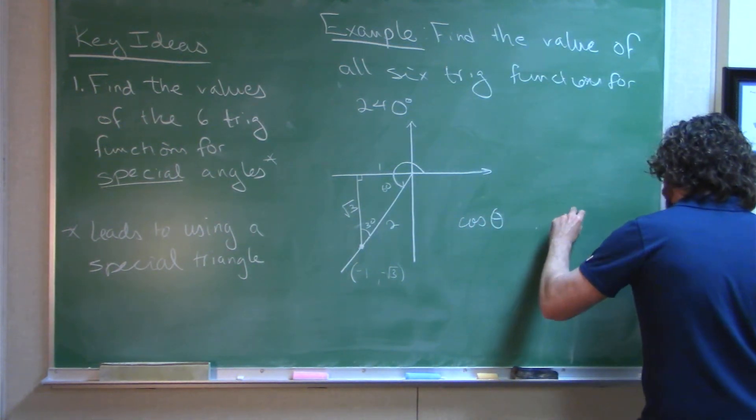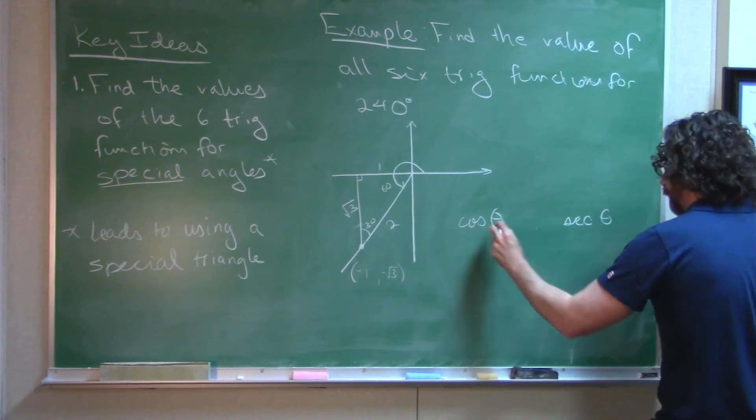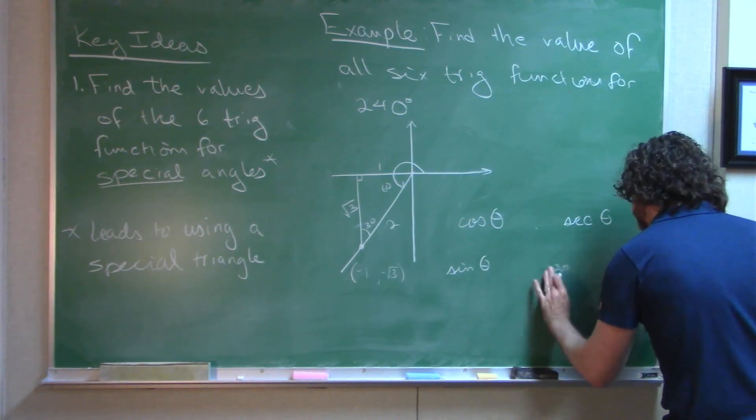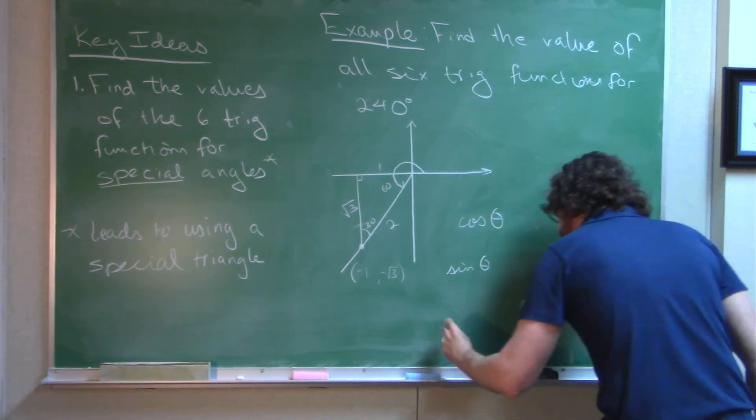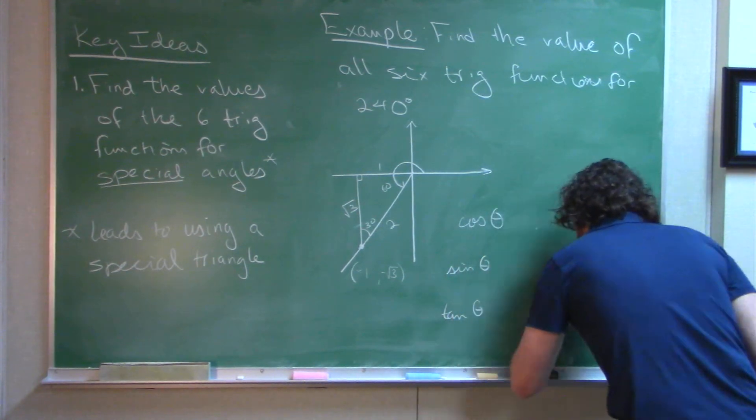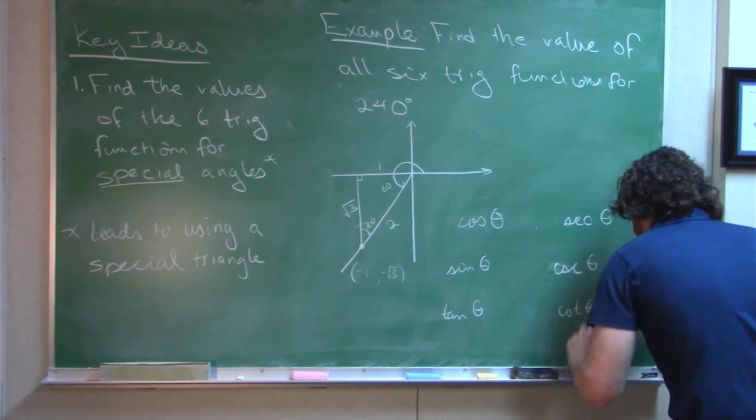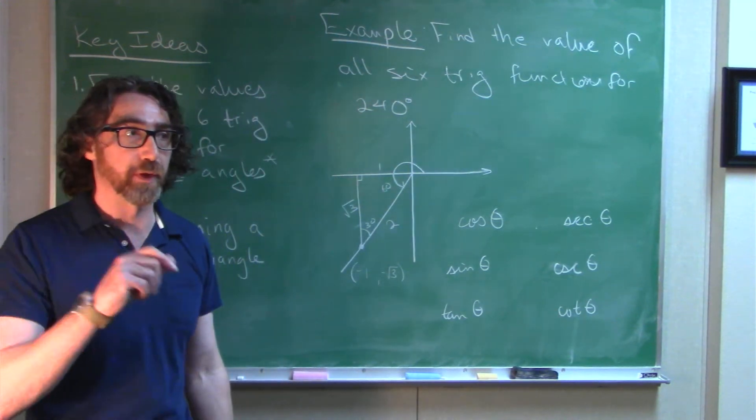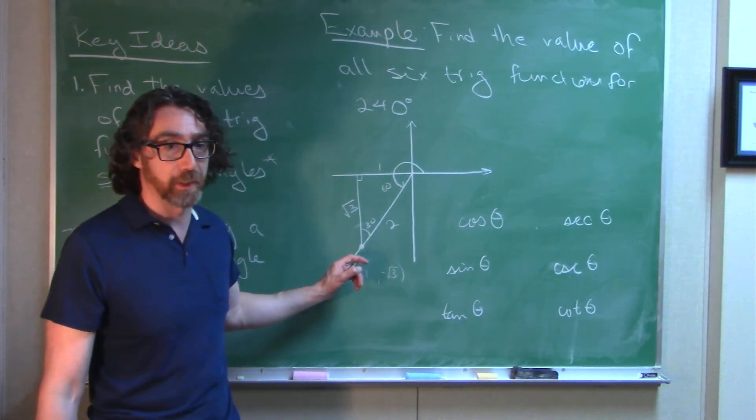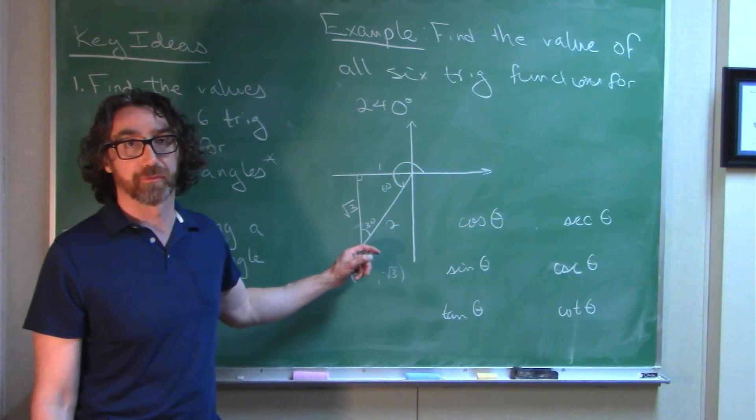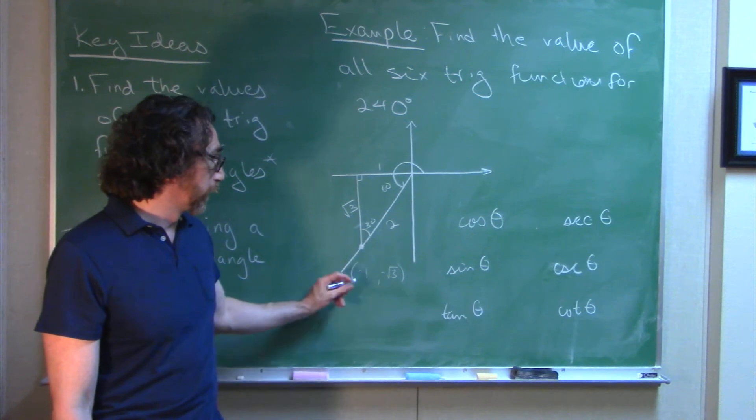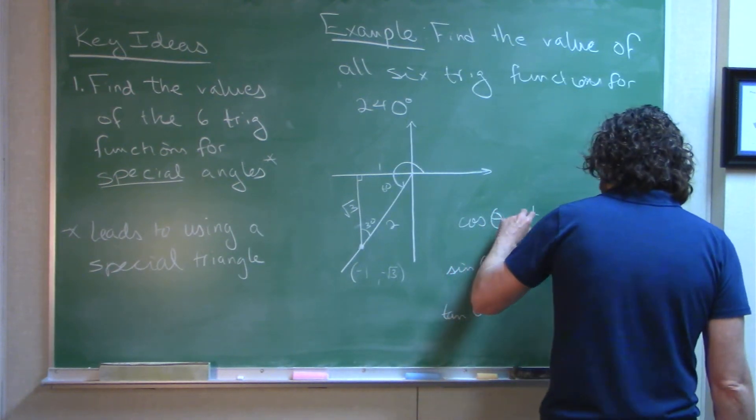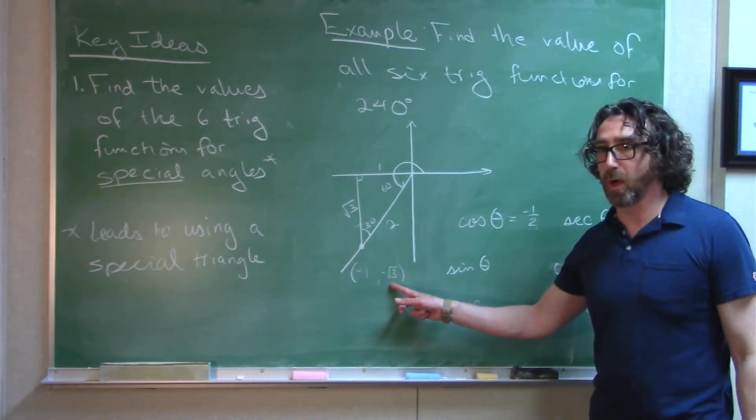So now we can get the value of the six trig functions. Once again, when we're starting out, let's try to write out all six, and let's keep them in this order: cosine theta, secant theta, sine theta, cosecant theta, tangent theta, cotangent theta. Now, we remember from our last video how we compute the six trig ratios given a point on the terminal side and r. Cosine theta is x over r: negative 1 over 2. Sine theta, y over r: negative radical 3 over 2.